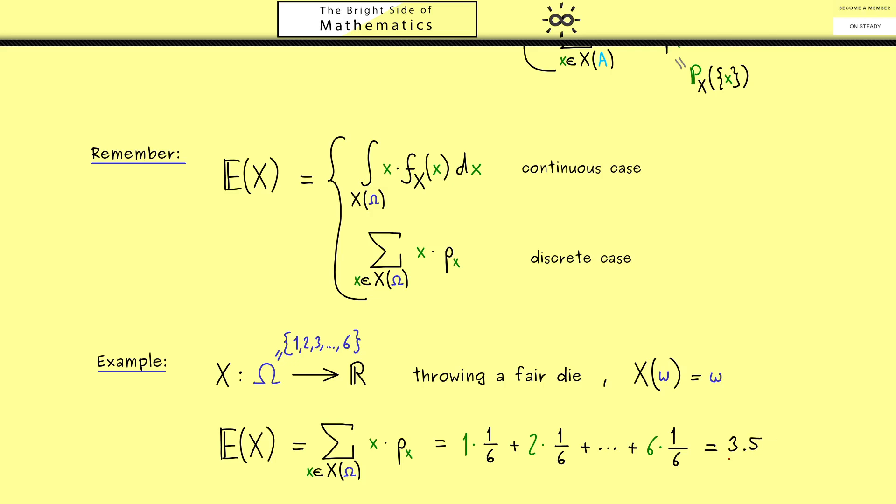Hence, this is the value we expect of the random variable. Therefore, one important thing you can immediately remember is that the expectation does not have to lie in the range of X. In other words, it does not have to be a possible outcome of the random variable. It's just a calculated mean of all the outcomes.